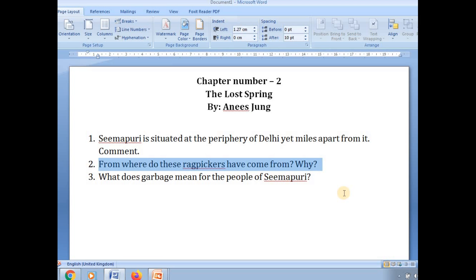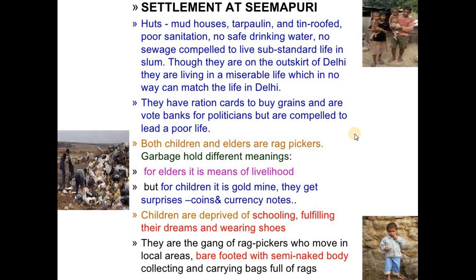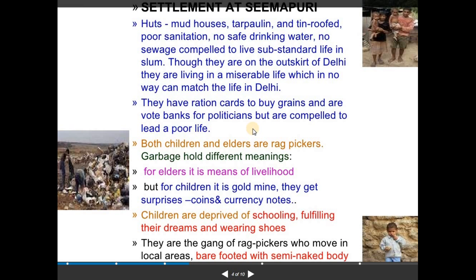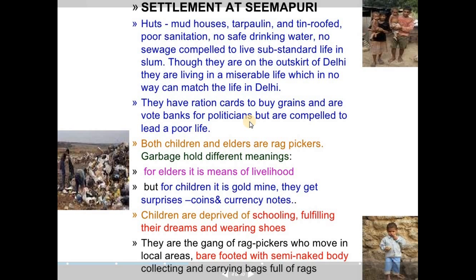These people were illegal immigrants who had come from Bangladesh, but they still managed to get ration cards and were able to buy grains. How were they able to get ration cards? Thanks to our politicians. Politicians saw this as a group of 10,000 people — a vote bank of 10,000 — and they did not consider them as illegal immigrants. Instead, they considered them a vote bank, and thanks to corruption, they provided them ration cards.